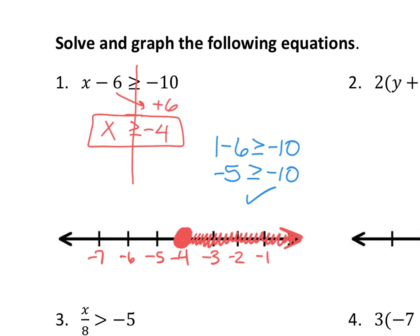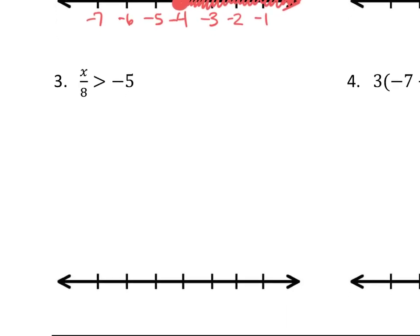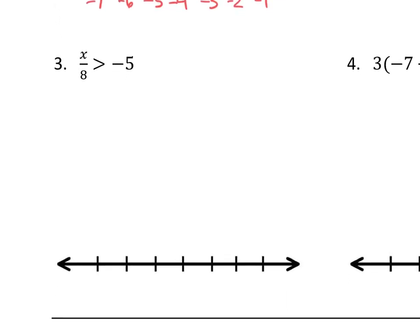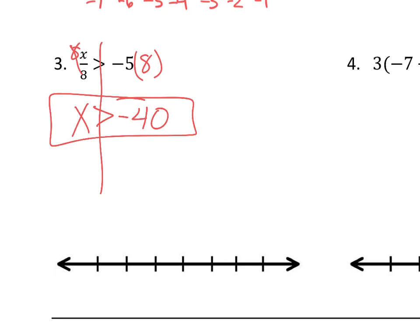I want you to try number 3 on your own — skip number 2 for a second. Solve the equation and try to graph it. We have x divided by 8 greater than negative 5, or x over 8. We draw our line down the center. To undo the division, we multiply both sides by 8. So negative 5 times 8 gives us negative 40. 8 over 8 cancels out, so we have x greater than negative 40.